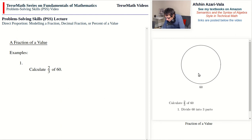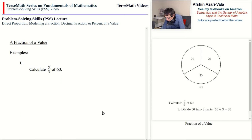If we imagine the circle on the right represents 60, then we need to divide that into three parts. If we do so, the size of each piece will be 20 — 60 divided by 3 is 20. So each piece has size 20. Now we take two pieces, and that gives us a total of 40.